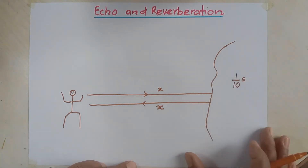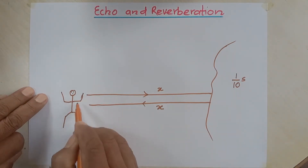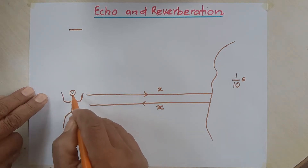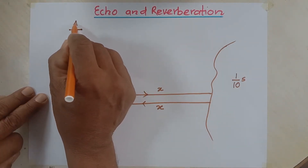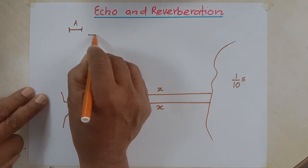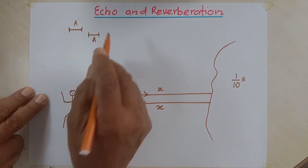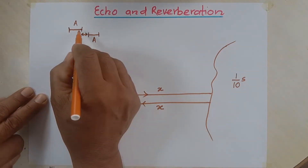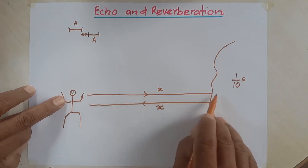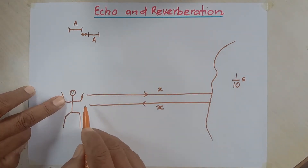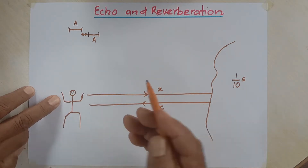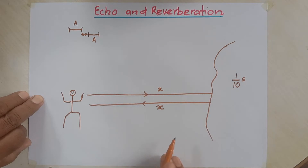Now what happens when a person says something in a loud voice? Let's say he says 'A'. This is the length of time up to which the effect of that 'A' remains in his ear. If the sound reflects back and comes to his ear after 1/10 of a second — when the effect of the previous sound is already finished — then the same 'A' can be heard twice. That's why it becomes 'A... A'.